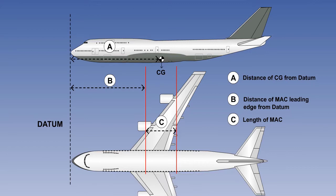Let us put the theory into practice and work through an example to calculate the Mean Aerodynamic Chord given values of A, B, and C. The distance of the centre of gravity from datum, A, is 420 inches. The distance of the leading edge of the Mean Aerodynamic Chord from the datum, B, is 380 inches. The length of the Mean Aerodynamic Chord, C, is 120 inches.